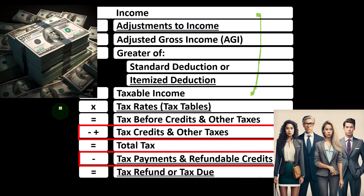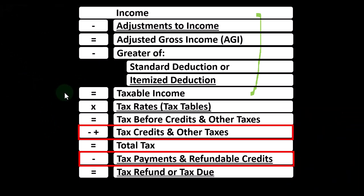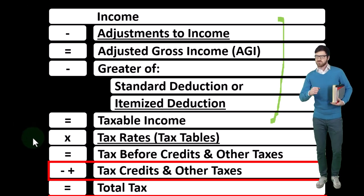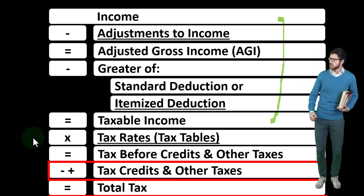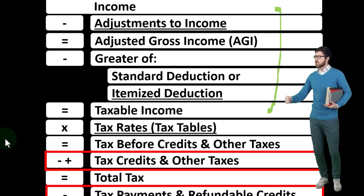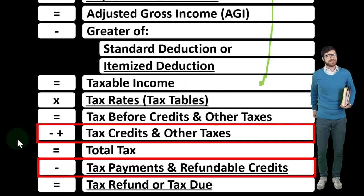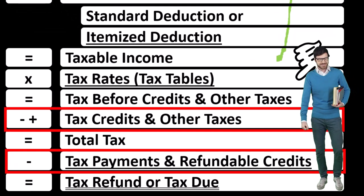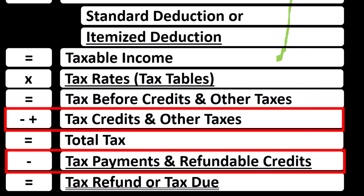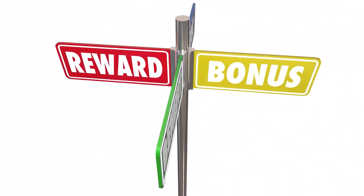If we can get a dollar credit or a dollar deduction, we typically want the dollar credit because we usually get the full dollar worth of benefit, as opposed to the dollar deduction which just decreases taxable income — the benefit being dependent upon our tax rate. Also remember we have non-refundable credits and refundable credits. Non-refundable credits do not take the tax liability below zero, whereas refundable credits do, transforming the tax code into kind of a welfare or benefit program for that refundable portion.